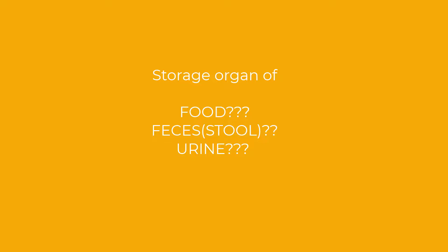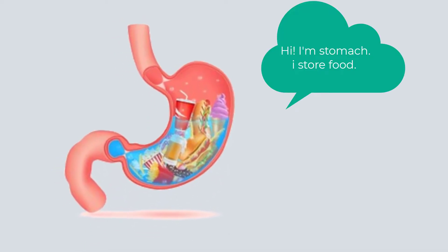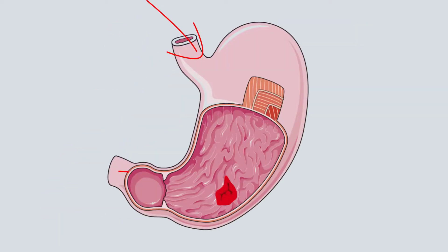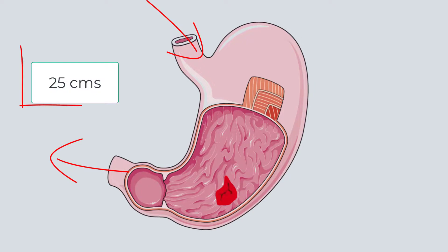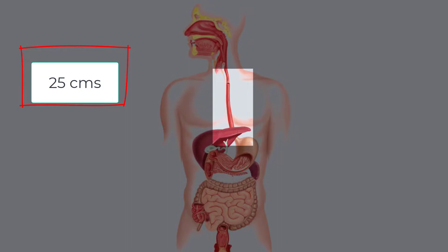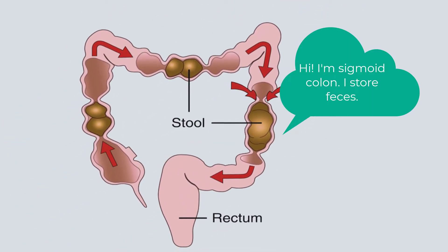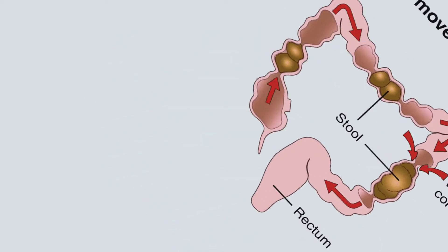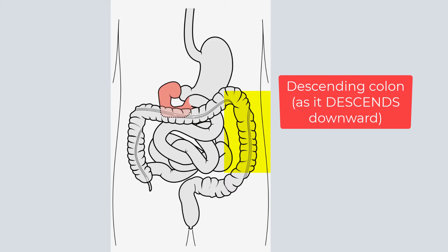The first is the food reservoir — the stomach. There are two structures: one coming towards the stomach and one going away from it, and both are 25 centimeters. The esophagus comes towards the stomach, and the duodenum goes away from it — both 25 centimeters. Similarly, the second reservoir is for stool — the sigmoid colon — and the descending colon connected to it is also 25 centimeters.